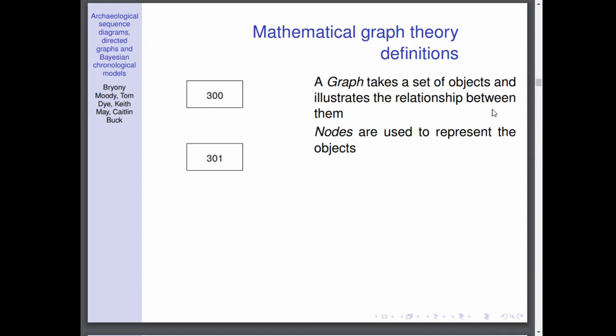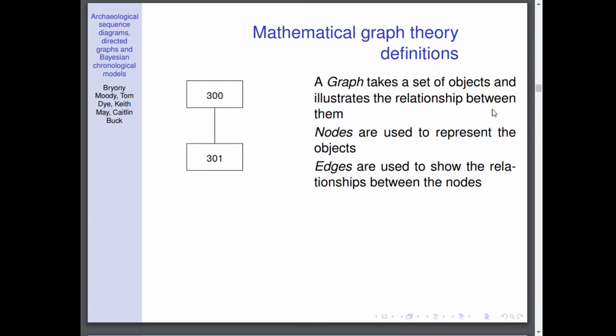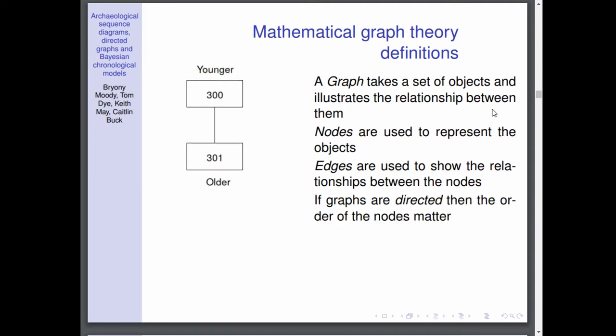Here are two contexts labeled 300 and 301 and these nodes are used to represent these objects. Edges are used to represent the relationships between these nodes. If we add a direction to the graph then the order of the nodes matter. Here I've used the conventional ordering that you use in a Harris matrix where older deposits are at the bottom and younger at the top.